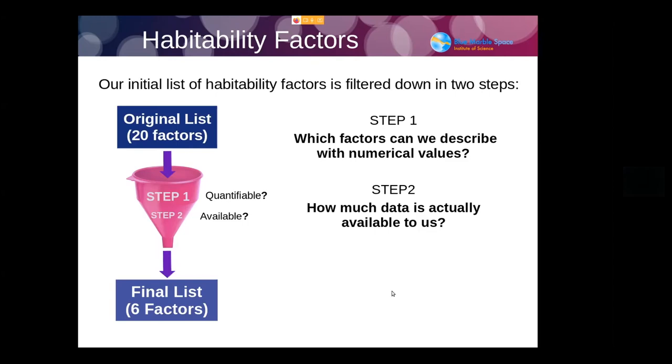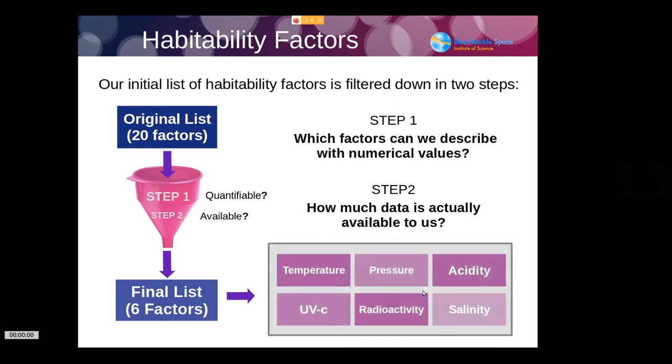We arrived at a final list of six particular factors: the temperature, the pressure, acidity, UVC, the radioactivity, and the salinity. Those proved very useful for assessing the habitability of these different targets and then being able to use that to give ourselves priorities of which was most likely to be habitable.